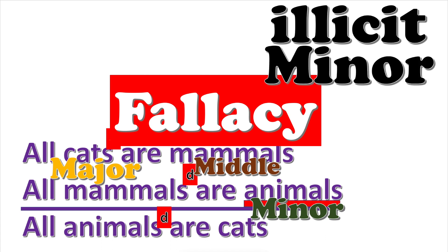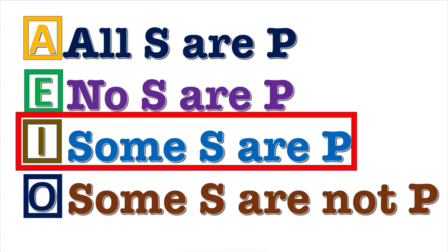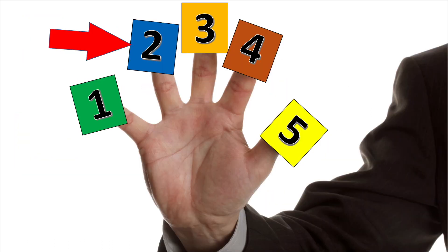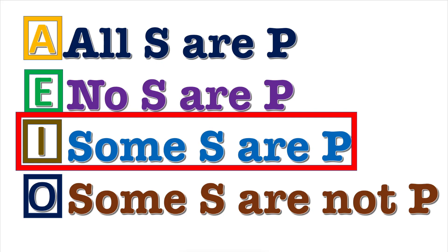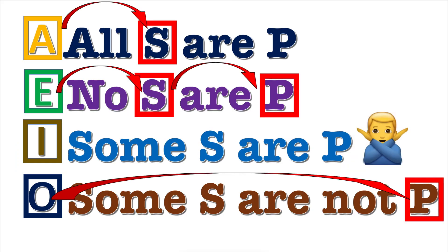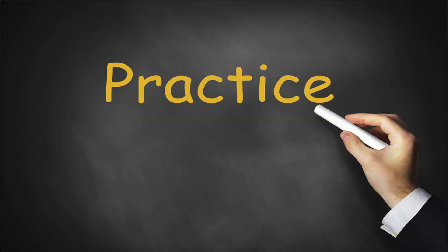If the conclusion is an I proposition, rule two will never be broken, because I propositions do not distribute either term.